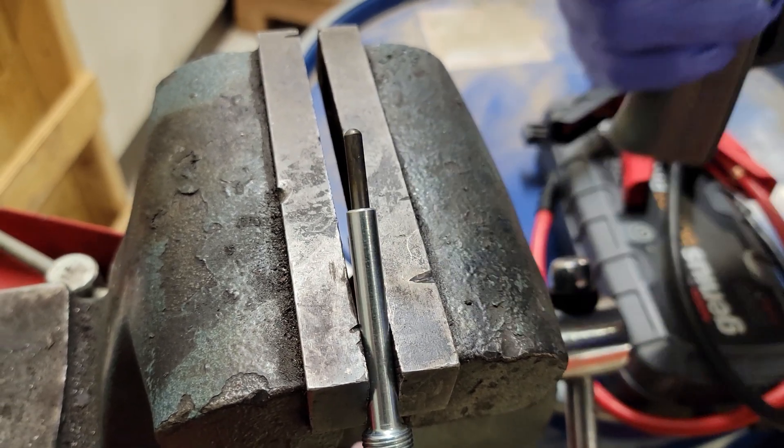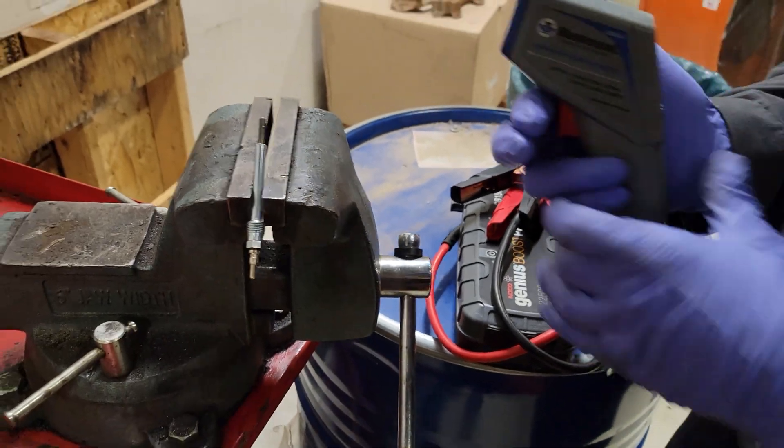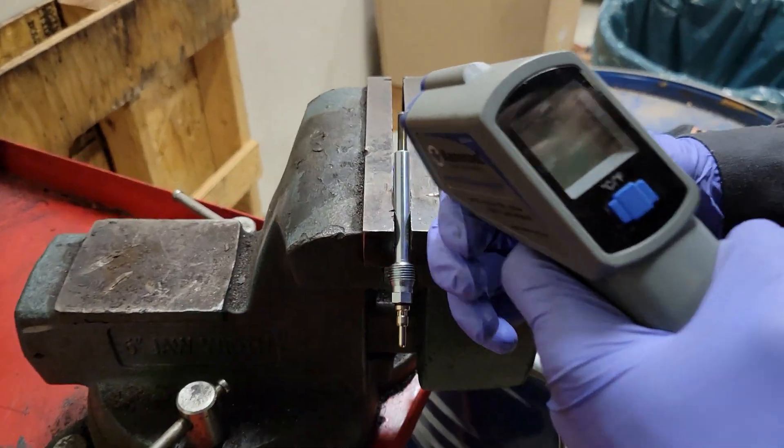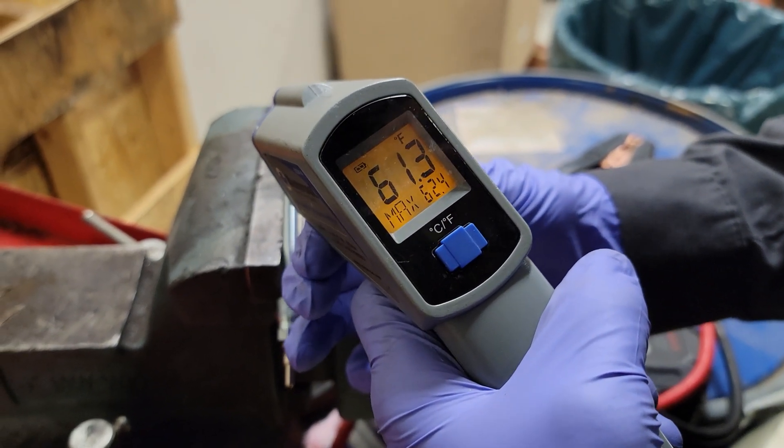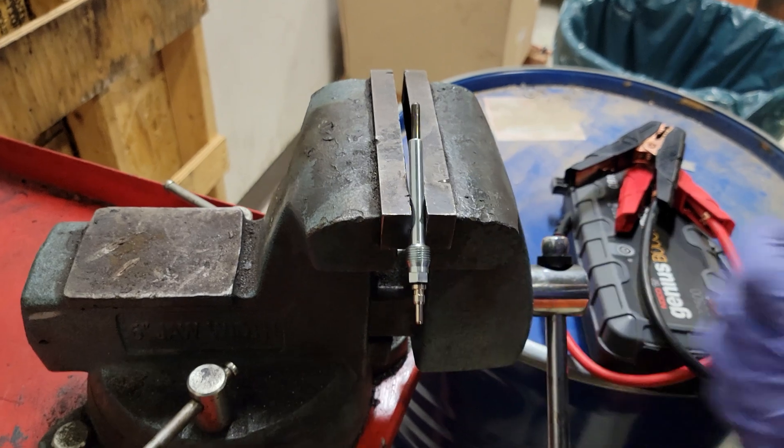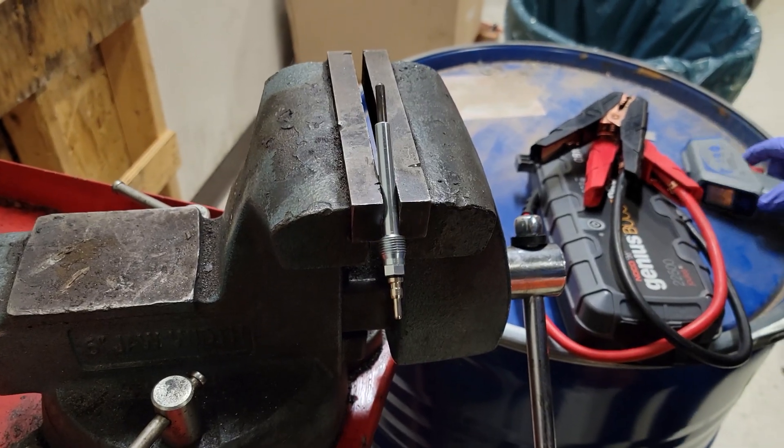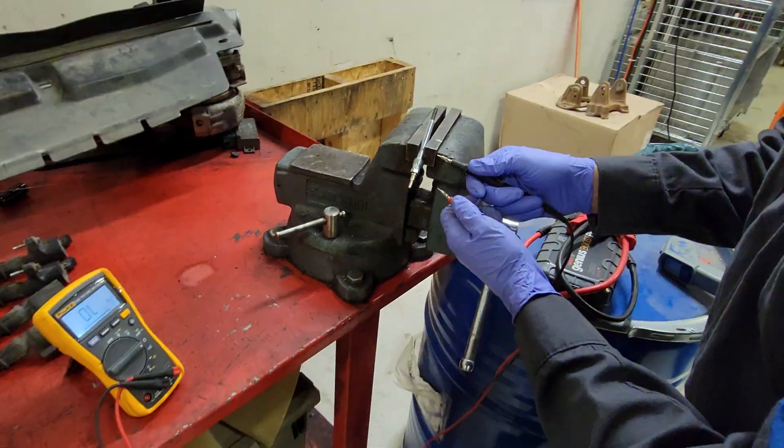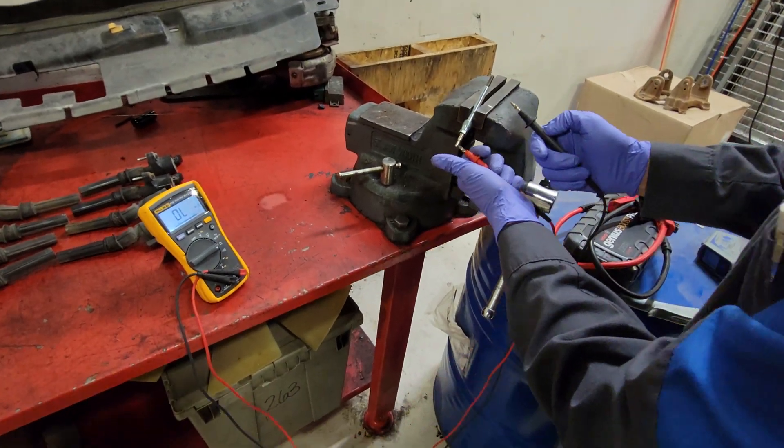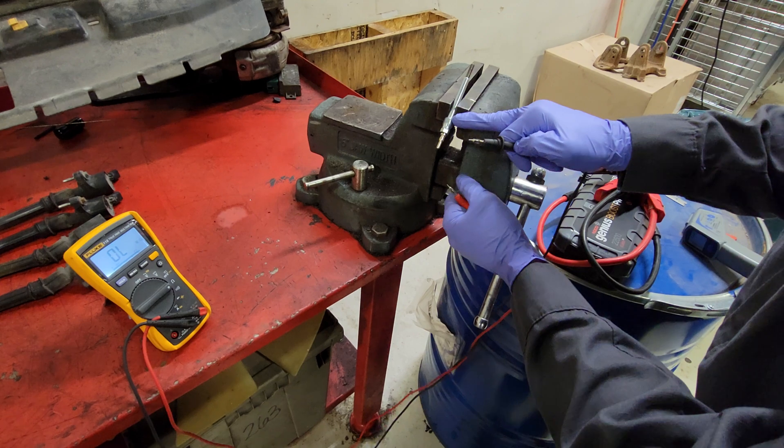I would say probably about this part up from my screwdriver up is about the amount that sticks into the cylinder. That's what's going to be glowing. So I'm going to measure right at the tip. What do we got? 61 degrees. Okay, so we have a totally cold glow plug.